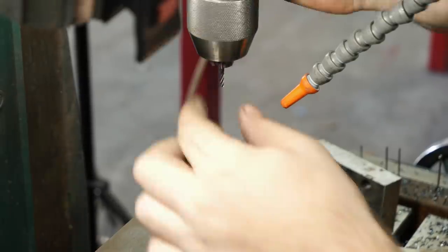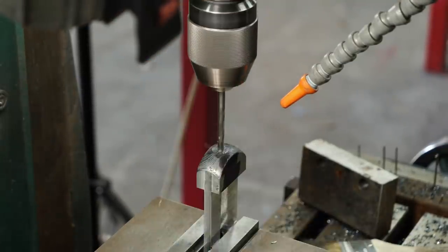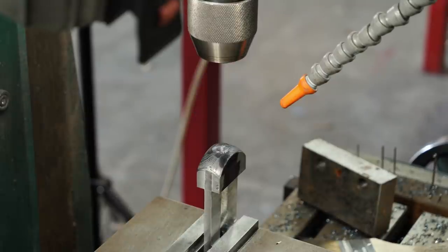On the pommel end of the handle, I drill some holes for the pommel nut. The pommel nut will screw on to the threaded end of the tang and hold the entire handle assembly together.